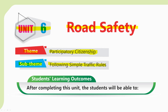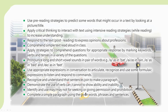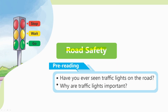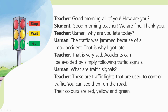Here are some student learning outcomes. Getting Started: Look at the picture and describe it in your own words. Road Safety. Reading: Have you ever seen traffic lights on the road? Why are traffic lights important?